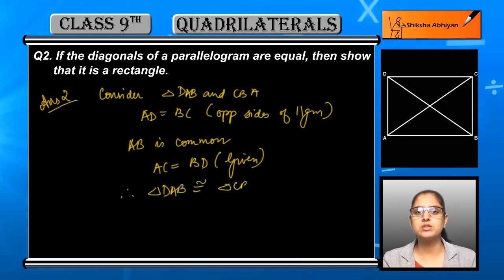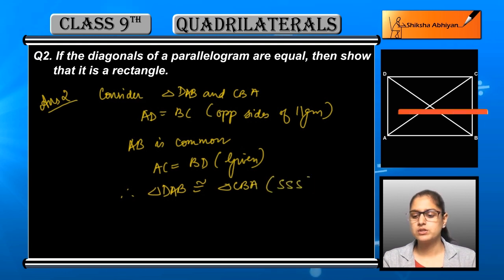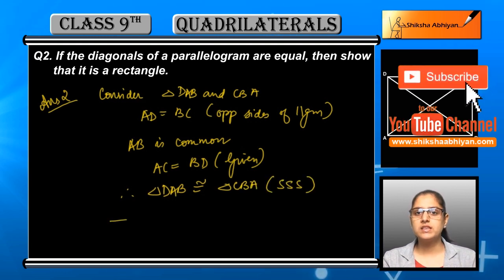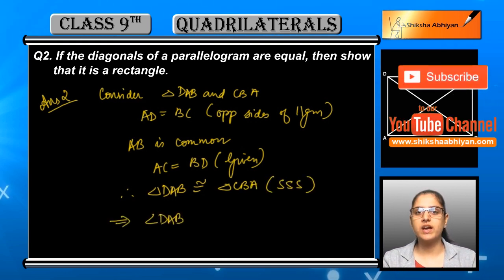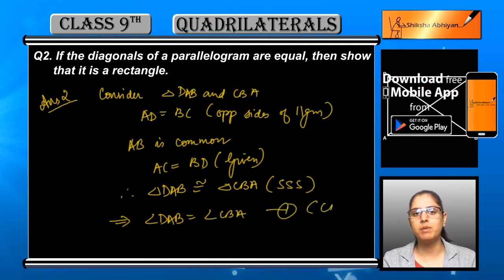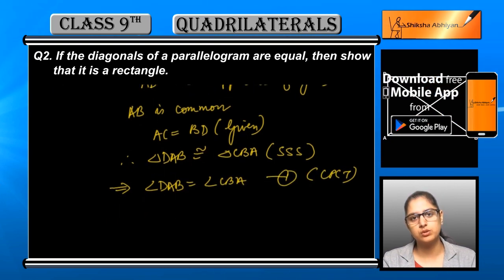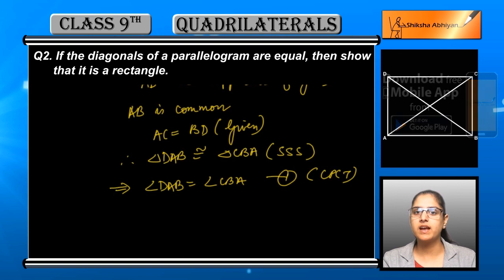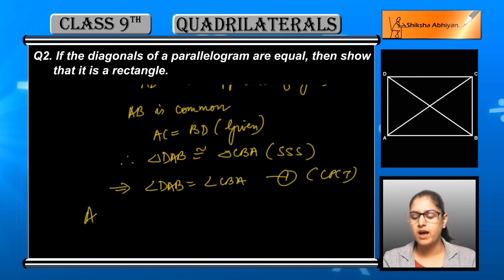From these three conditions, we can say that triangle DAB is congruent to triangle CBA by the SSS congruence rule — that is, Side-Side-Side.